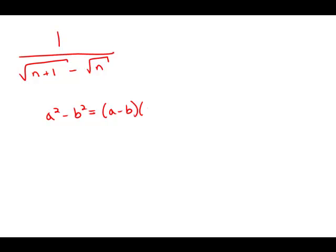a minus b times a plus b. If we multiply a minus b times a plus b, we get a squared minus b squared. And this is particularly useful when we have radicals because it allows us to square the radicals and simplify.